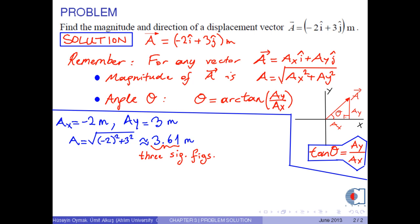An angle theta is found by the formula arctangent of 3 over minus 2. Then the result is approximately minus 56.310 degrees.